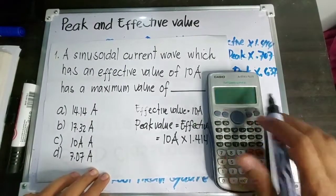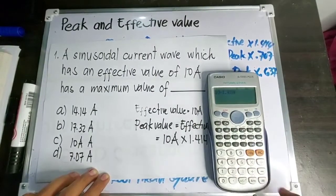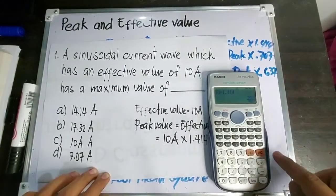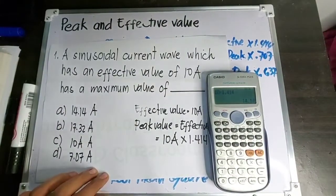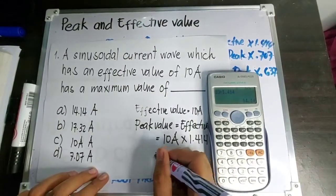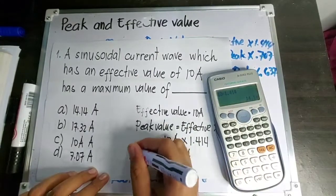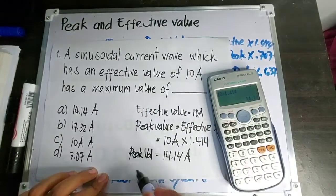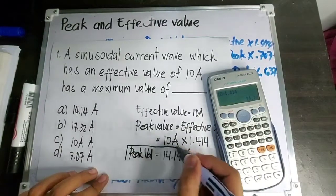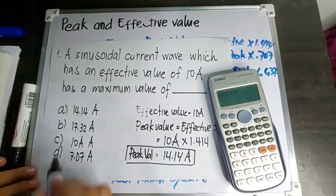Using this calculator: 10 times 1.414. Naka-fraction siya, so switch natin sa decimal. 14.14. So the answer is 14.14 ampere. Ito yung peak value.